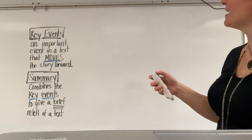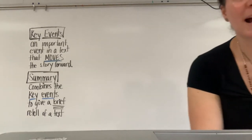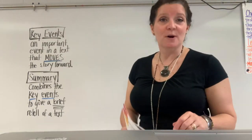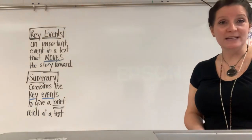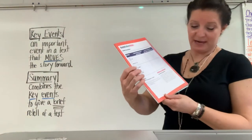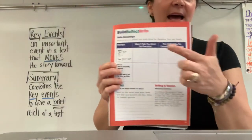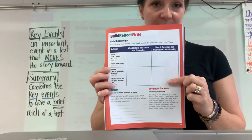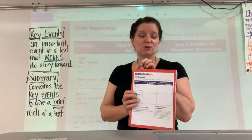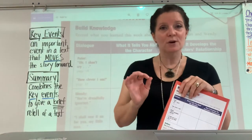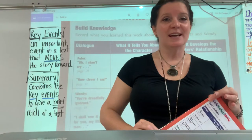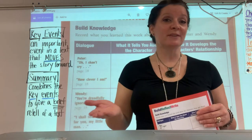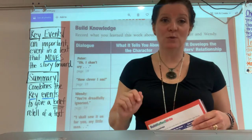Now I'm going to turn the screen back on because, to wrap up our analysis — that's what we do when we take a closer look at a text — to finish up our analysis of Peter and Wendy, Come Away, Come Away, we're going to look at page 21 and we are going to build, reflect, and write. We're going to work on the chart that's on the top part of the page. Throughout our stories in this close read, we have taken a close look at characters' actions and words to help us see what it reveals about their character and also what it reveals about the relationship of the characters.